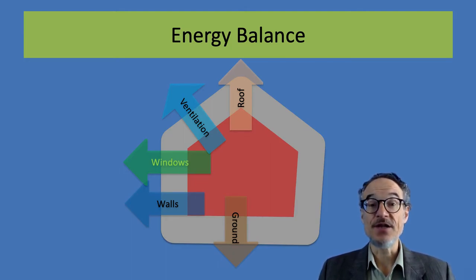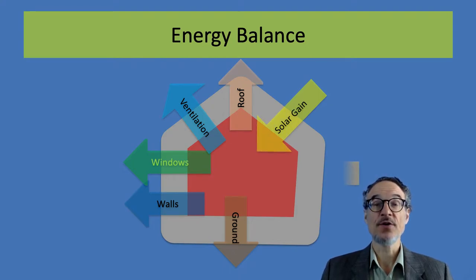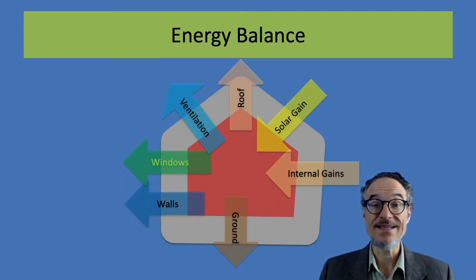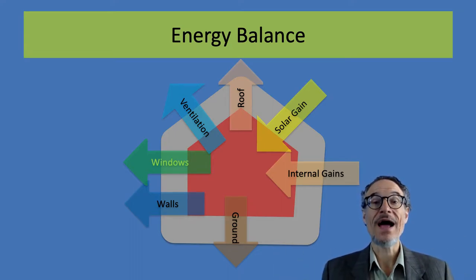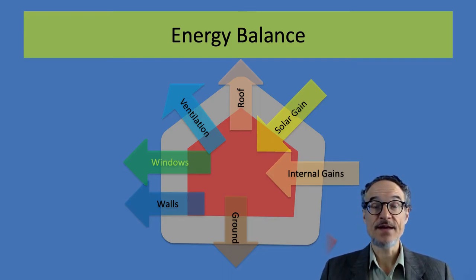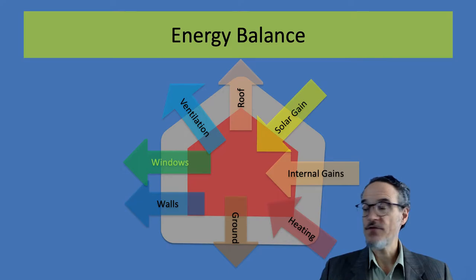We also gain energy — there is some free energy gain. Part of this is the solar gain: sunshine through our windows will bring some heat in. There are also internal gains — electrical appliances, people, and pets are all adding heat into the house. Usually these are not enough, so you need to add some heating. The energy in must equal the energy out, so you need to adjust the heating to maintain the right comfortable temperature.